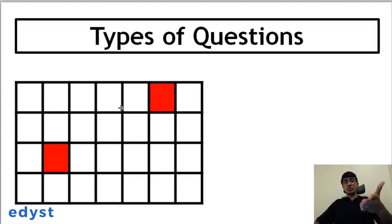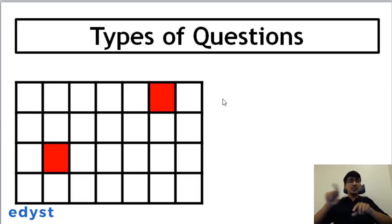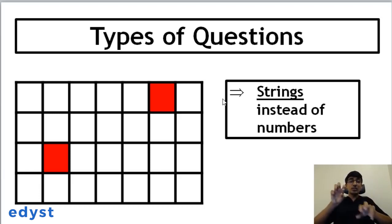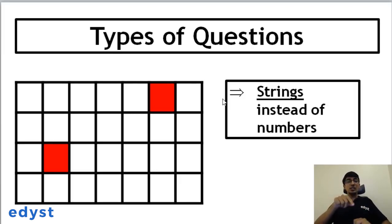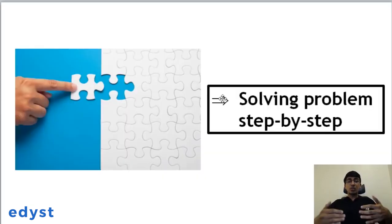The second type of problem you can face with CodeVita is something like this: you're given a map in the form of a 2D array with two red cells. You need to know how to traverse a 2D array, and you have to find the distance between the two dots — except the dots are strings instead of numbers. So the distance is calculated in terms of strings, not numbers. You need concepts of 2D arrays, strings, and how to define a custom distance function between two strings.